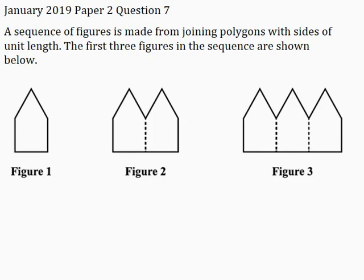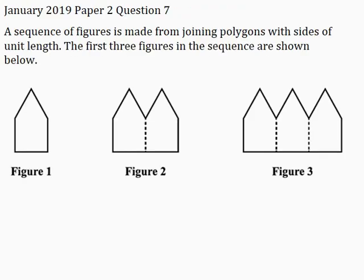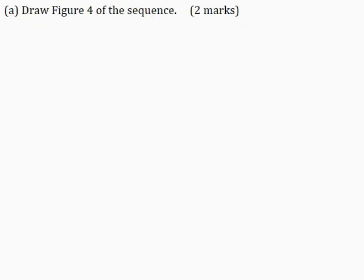A sequence of figures is made from joining polygons with sides of unit length. The first 3 figures in the sequence are shown below. Part A: draw figure 4 of the sequence for 2 marks. In figure 1 there is 1 polygon. In figure 2 there are 2 polygons joined together. In figure 3 there are 3 polygons joined together. So in figure 4 there will be 4 polygons joined together. I will now draw figure 4.